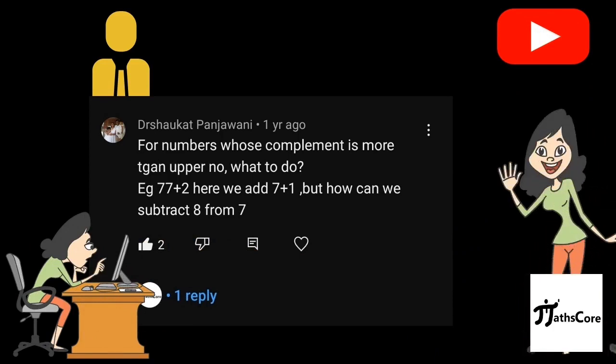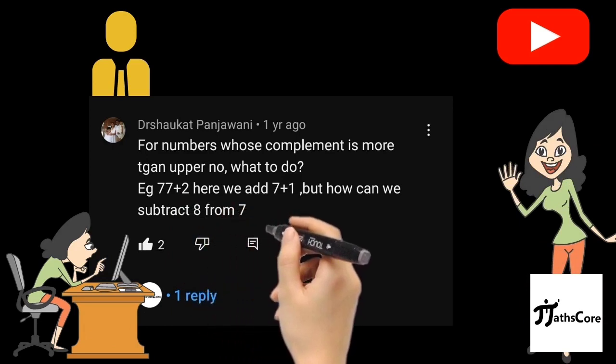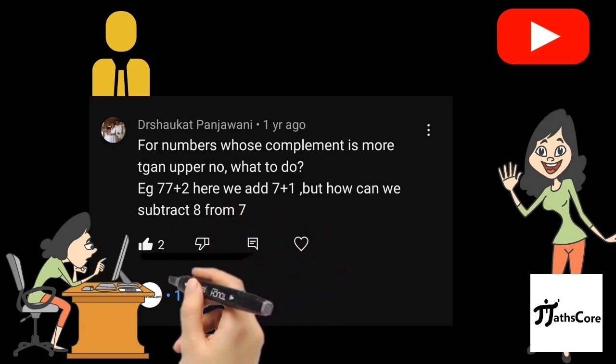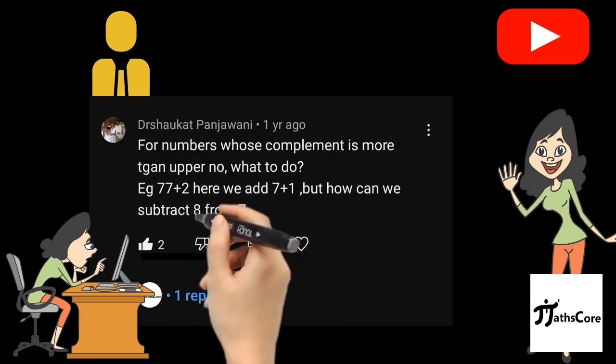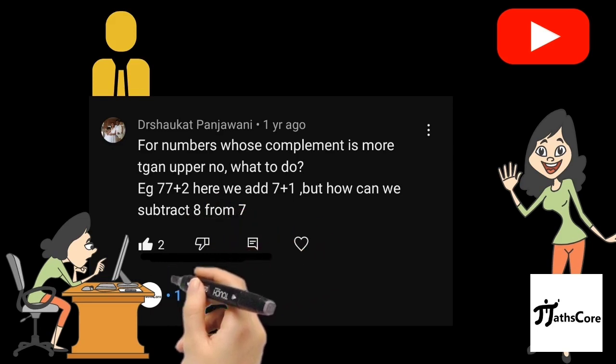The comment is, for numbers whose complement is more than upper number, what to do? Example: 77 plus 2. Here we add 7 plus 1, but how can we subtract 8 from 7?